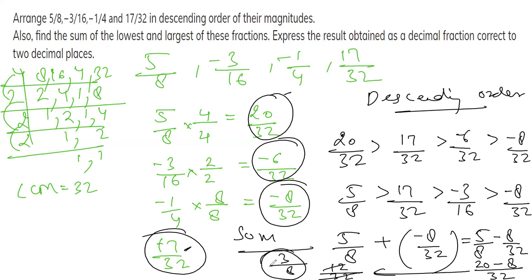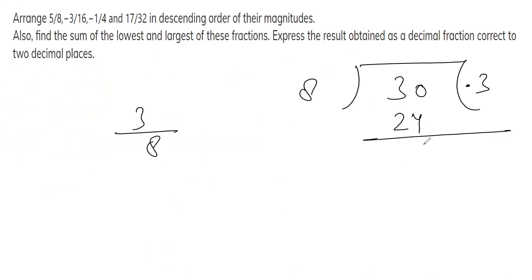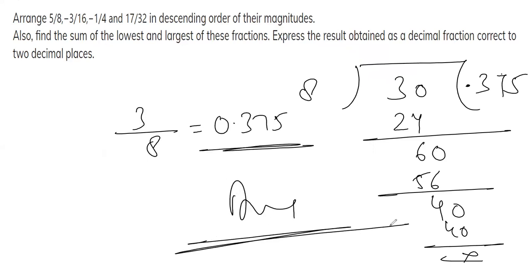The sum is 3 by 8. Now convert 3 by 8 to a decimal. Since 3 is smaller than 8, place a decimal point: 8 into 30 goes 3 times (24), remainder 6; 8 into 60 goes 7 times (56), remainder 4; 8 into 40 goes 5 times exactly. So 3 by 8 equals 0.375.